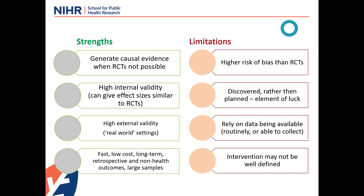The limitations are basically to do with the fact that they are not randomized, so there continues to be a higher risk of bias. Very often they're discovered rather than planned — you find something has changed in an urban environment and would like to evaluate it retrospectively, so there's an element of luck involved and reliance on data being available. The intervention may not be well defined, and it can be very difficult to determine who the exposed and unexposed populations are.